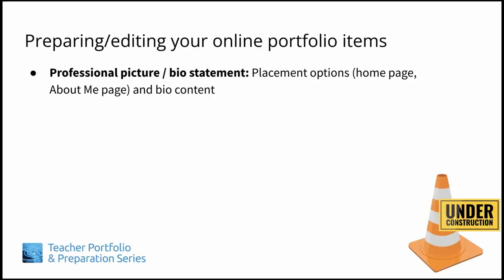Now for some tips and suggestions for particular online portfolio items. A professional picture and an accompanying bio statement are typically the first items a visitor to your online portfolio will see or seek out. Many choose to display them on their portfolio homepage so they are front and center, while others create an About Me page and use the homepage to showcase an image or favorite quote that captures the focus or theme of the portfolio. Bio statements are often brief — a couple of paragraphs at most — and typically focus on your professional background and highlights of your work experience and accomplishments. Some people also choose to include a sentence or two about their personal interests, such as hobbies, to help create a fuller picture.